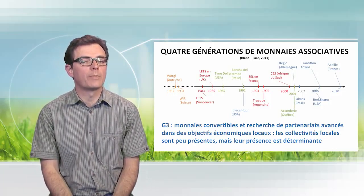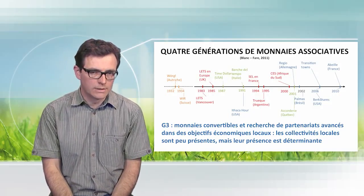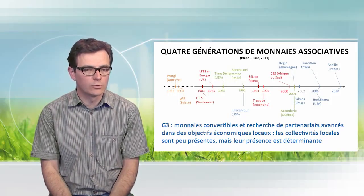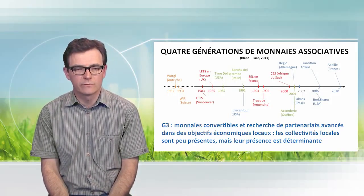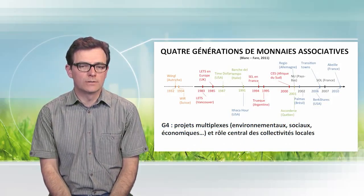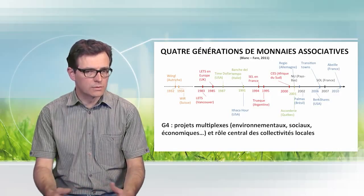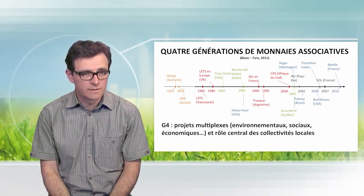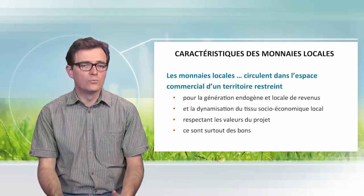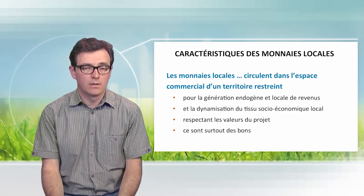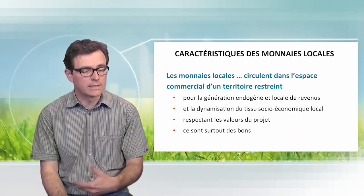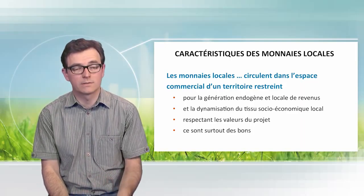Finally, we have a generation of local currencies — the first experiments in the United States in Ithaca in the early 90s, and very diversified in France in the year 2000. The first local currency was created in 2010 in France with a currency called the Abeille, which stands for B in Villeneuve-sur-Lot. We also have another trend in the 2000s — a more complex system with several objectives at the same time.